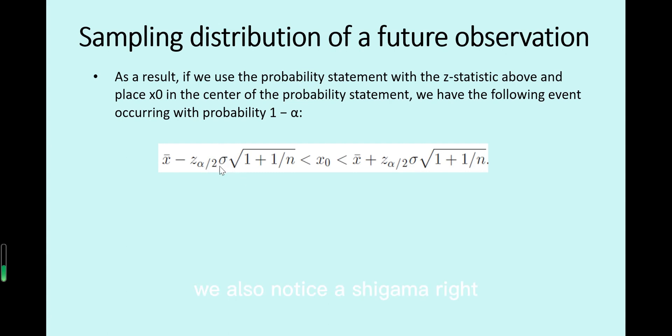We also know this is σ, right? Known variance, just take a square root of the variance. Then times √(1 + 1/n). And for the upper bound, just x̄ plus this.